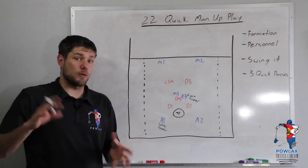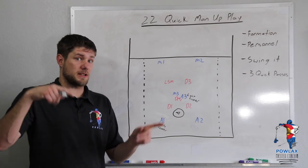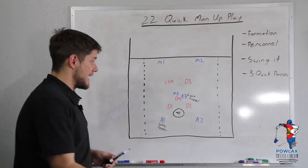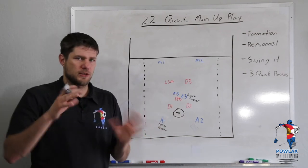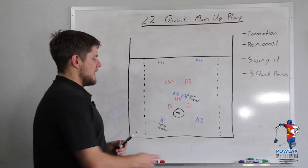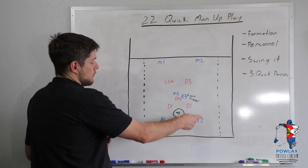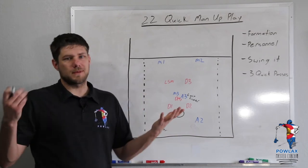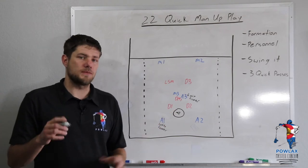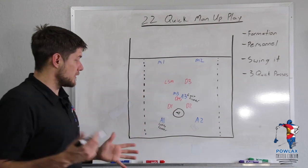Now if we were running this for a lefty finisher, what we're going to do is we're going to actually swing the ball the other direction. And now M3 or A3 I guess could be the lefty finisher. You would just have them kind of switch sides and then A2 would be your righty feeder. So we're going to run this for the righties because for the most part, most of the players are righty anyway.